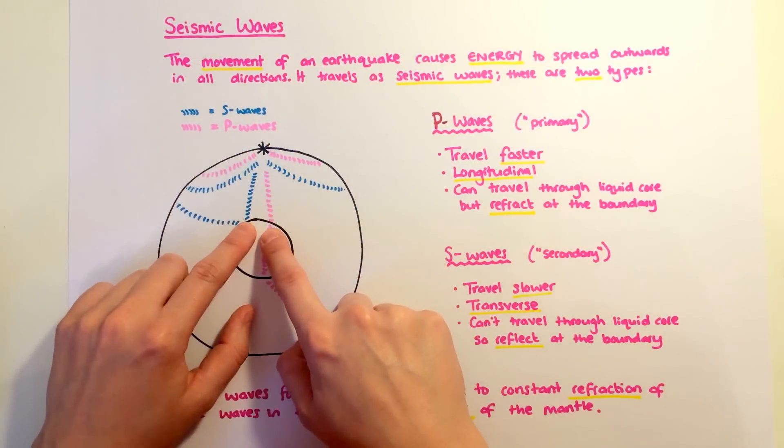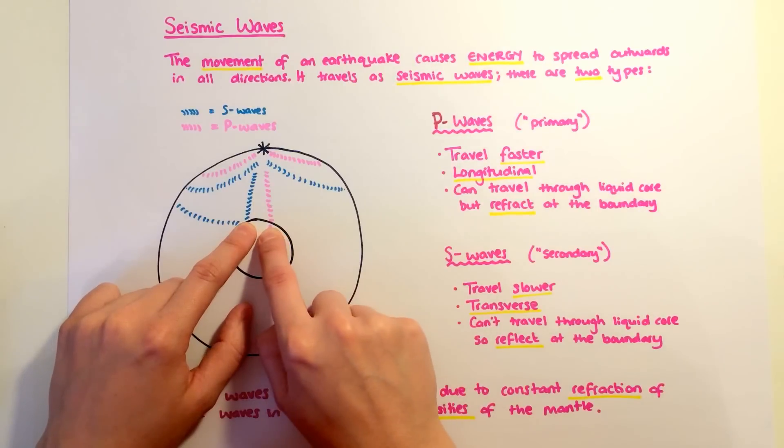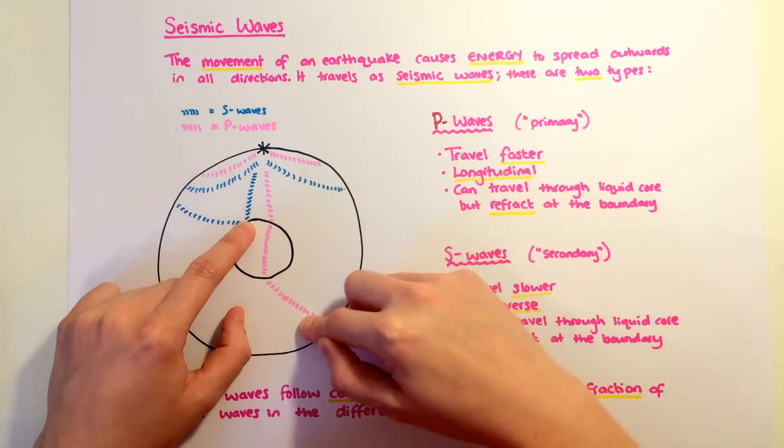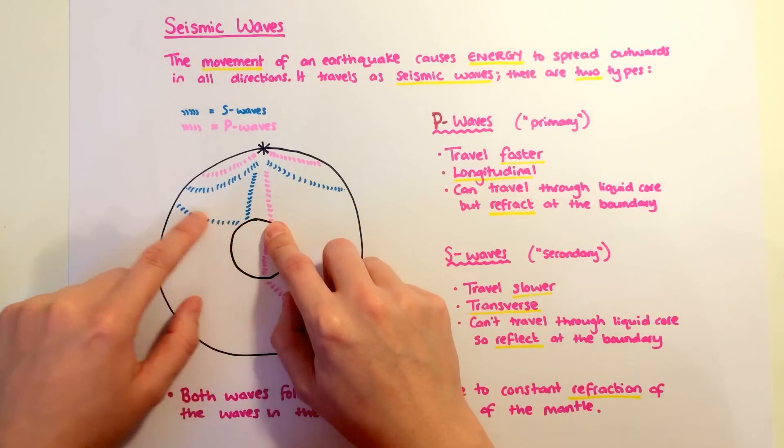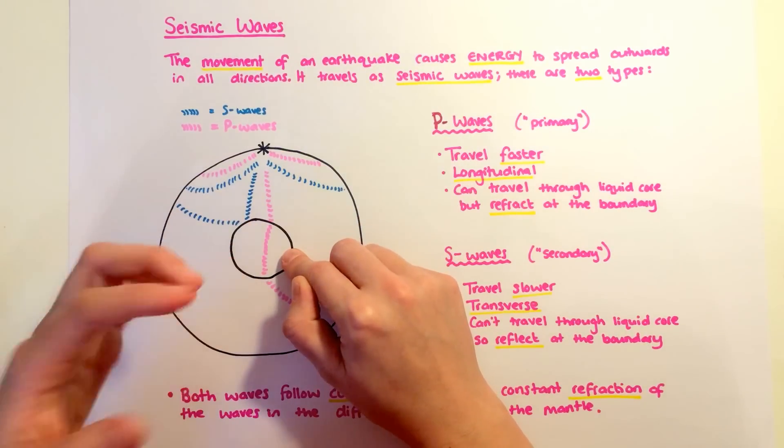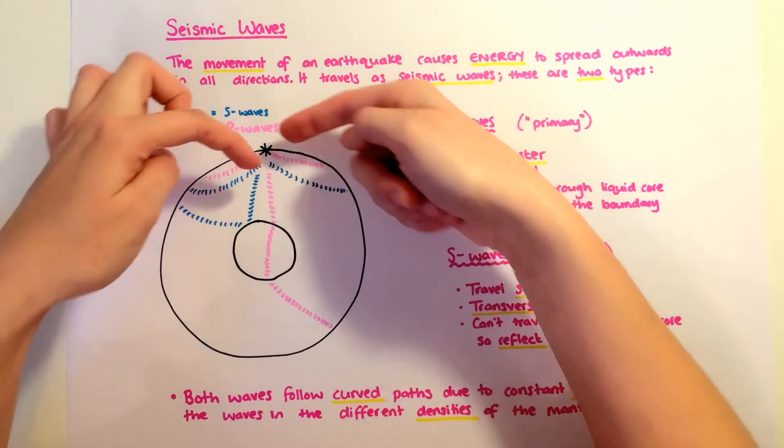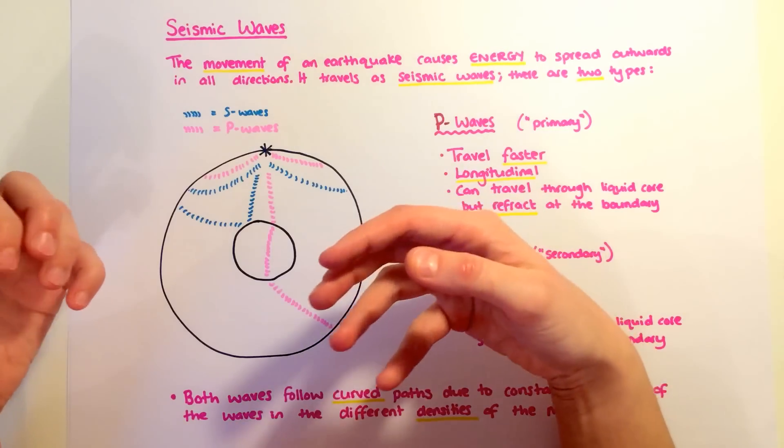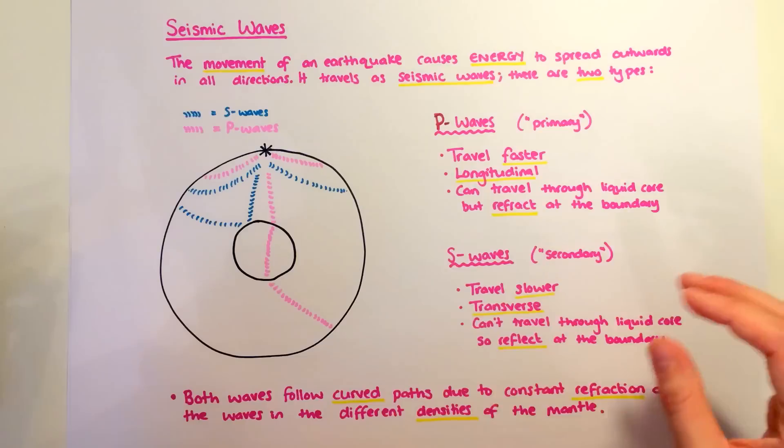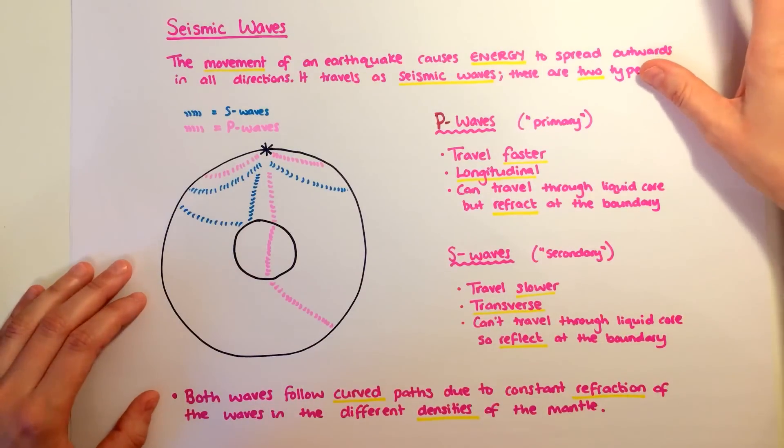When they get to the core, P waves and S waves behave differently. P waves can travel through liquid, so they can travel through the core, whereas S waves can't. The S waves get reflected off and as the P waves pass through, they're refracted. Both waves follow curved paths because there are lots of different densities in the mantle so we've got constant refraction of those waves.